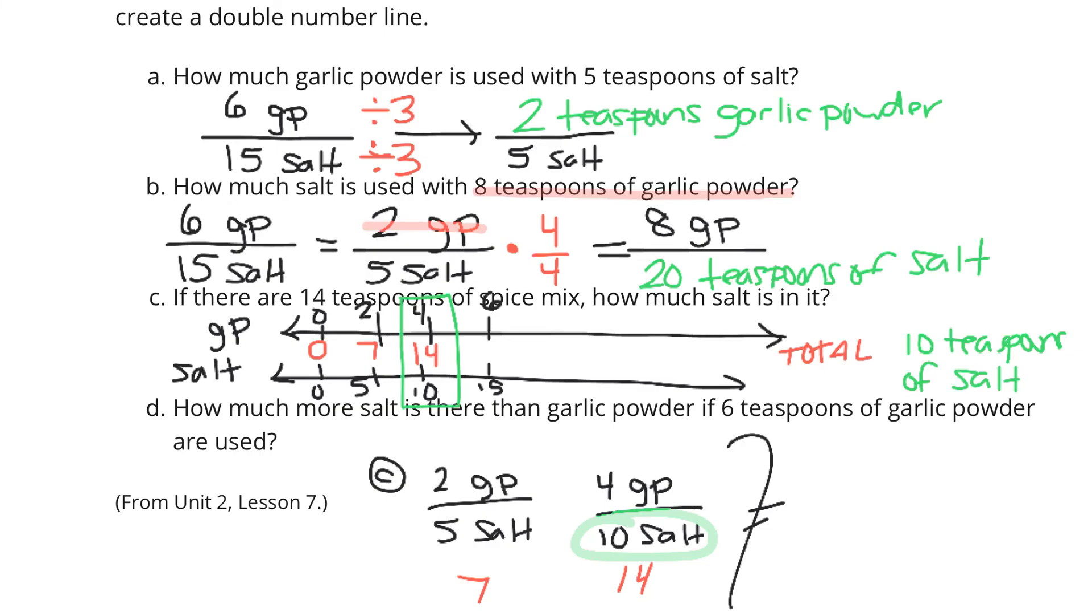Now, in D, how much more salt is there than garlic powder if six teaspoons of garlic powder are used? Well, we have our initial ratio, right? We have six garlic powder to fifteen salt. So how much more salt than garlic powder if six teaspoons of garlic powder are used? Fifteen minus six is our solution of nine teaspoons of salt.